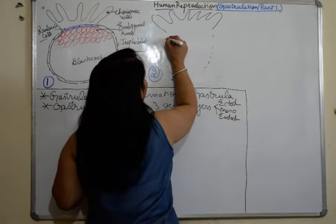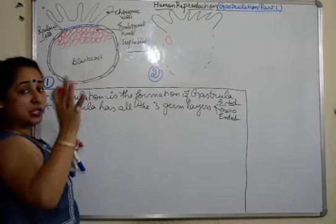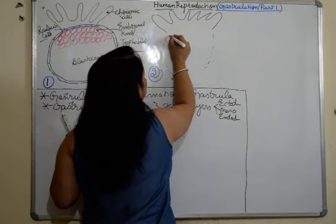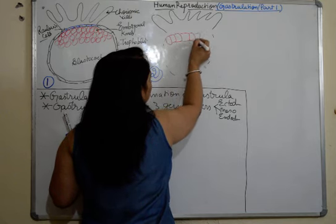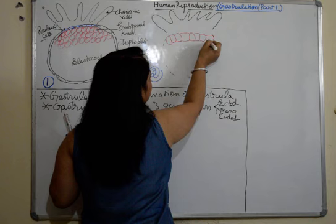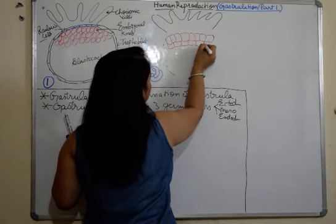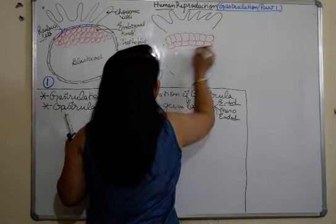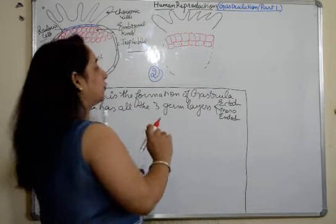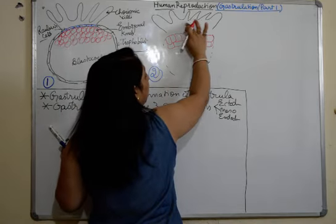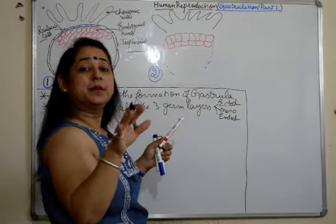When the Rauber cells degenerate, the embryonal knob — which was a rounded cluster of cells — arranges itself in a planned, layered manner to form a structure called the embryonal disc, because it forms a disc-like structure.